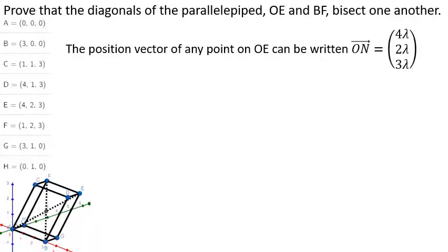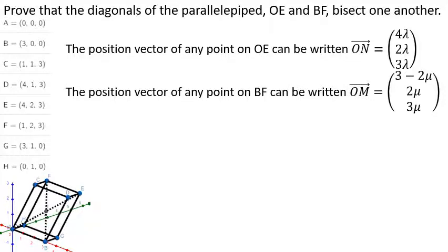Next. We know now that the position vector of any point on the line OE can be written as (4λ, 2λ, 3λ). And any point on BF can be written as (3 - 2μ, 2μ, 3μ). Now that's any and every point on those two diagonals.